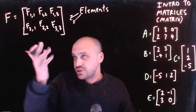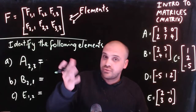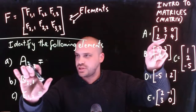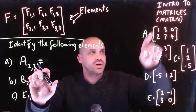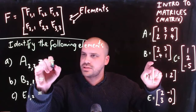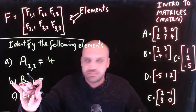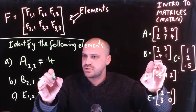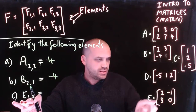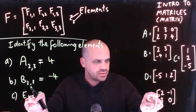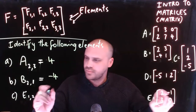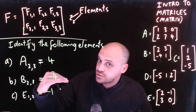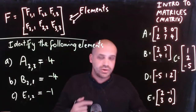This matrix has 6 elements. You might get asked to identify a particular element. For example, matrix A, row 2, column 3 — the answer is 4. Matrix B, row 2, column 1 — the answer is negative 4. And matrix E, row 1, column 2 — negative 1. You need to make sure you're counting down how many rows and then counting across how many columns.